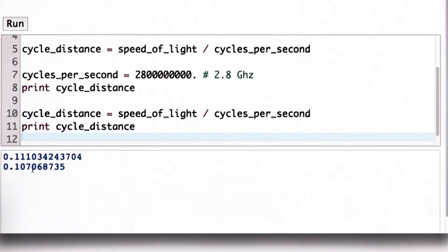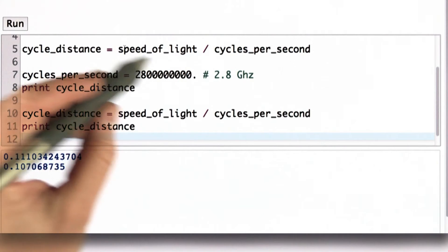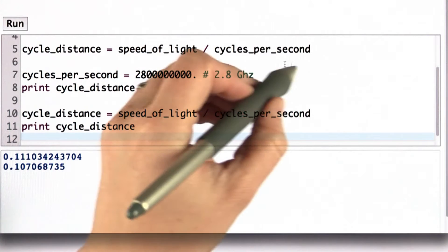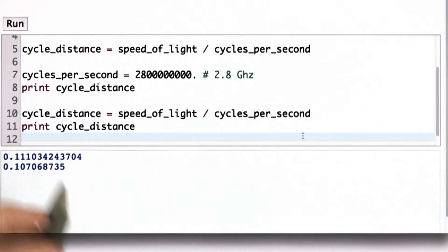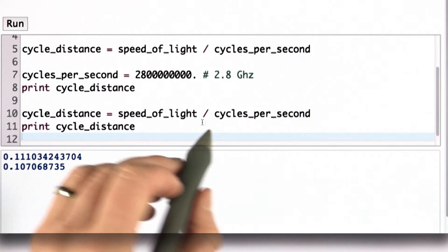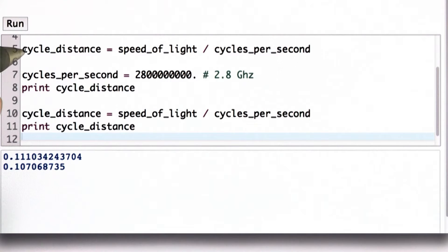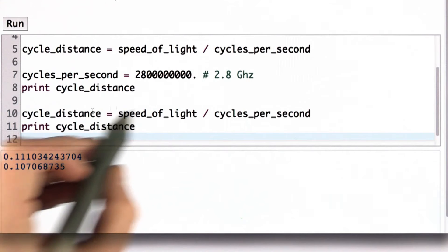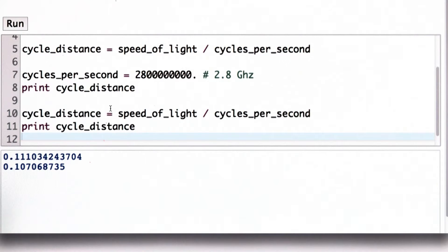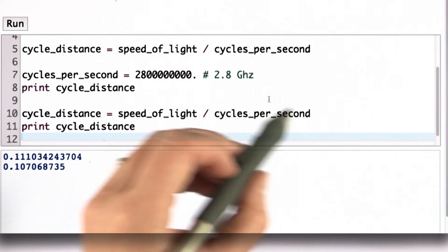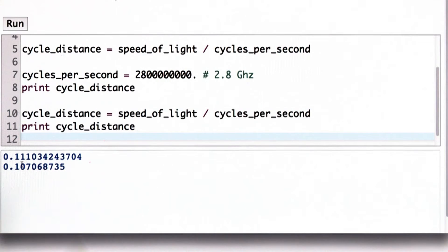So what happens now that we have assignment, the same expression can have different meanings different times we evaluate it. The value of speed_of_light divided by cycles_per_second depends on what the current value of cycles_per_second is. When we evaluate the first one, the value was 2,700,000,000, so we got a different result, which is the 0.111 result. When we evaluate the same expression the second time, the result is different because the value that cycles_per_second refers to is different, and that's why we get the smaller cycle_distance the second time.